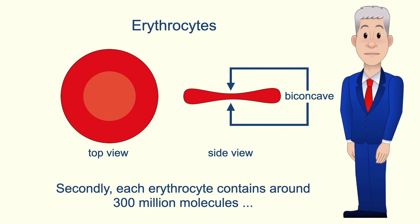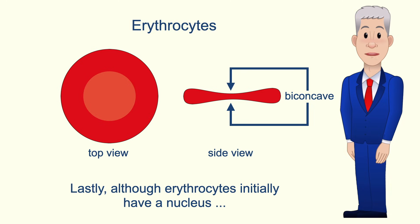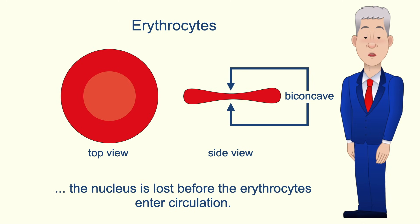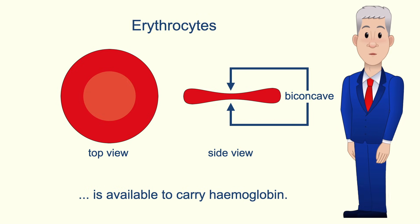Secondly, each erythrocyte contains around 300 million molecules of the oxygen carrying protein haemoglobin. And lastly, although erythrocytes initially have a nucleus, the nucleus is lost before the erythrocytes enter circulation and the absence of a nucleus means that more of the erythrocyte's volume is available to carry haemoglobin.